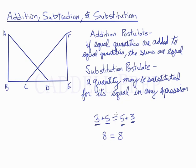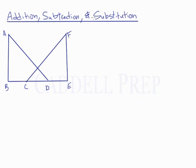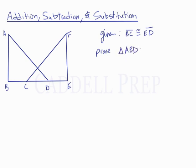So now the question is, how do we use this in our proofs? We're going to look at an example. Let's say we're given that BC is congruent to ED, and we're asked overall to prove that triangle ABD is congruent to triangle FEC. This isn't the only given information — we're given other information too — but we're just going to focus on one aspect of this proof.